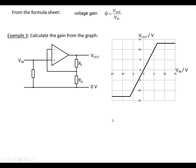Example 3: calculate the gain from the graph. So we've got a graph showing V out against V in. So what you want to do is you want to choose a nice point on the graph, nice easy points to read. This is about as easy as it gets: V out is 10 volts when V in is 5 volts.